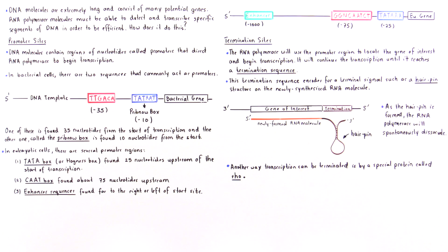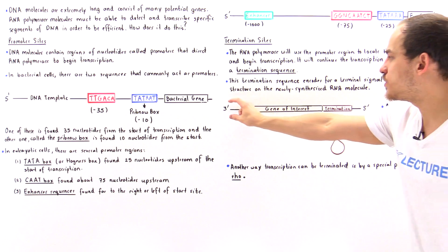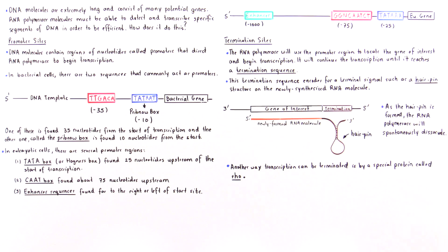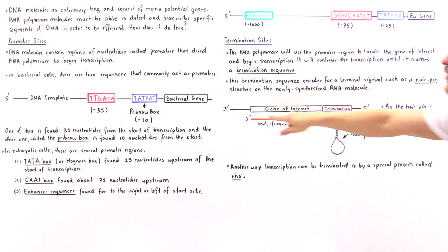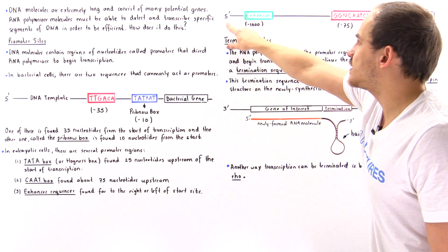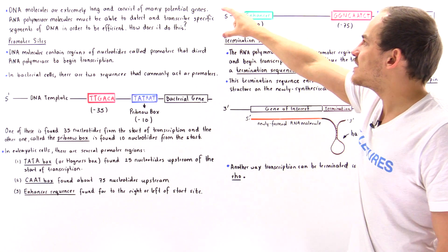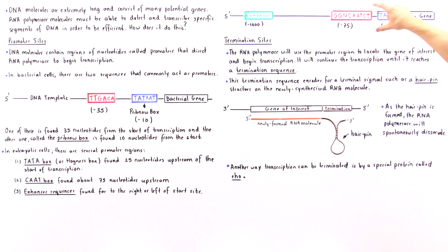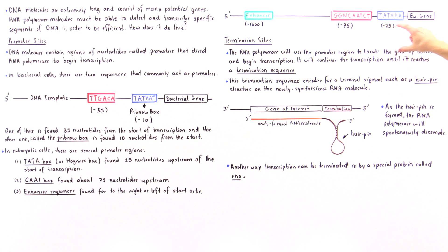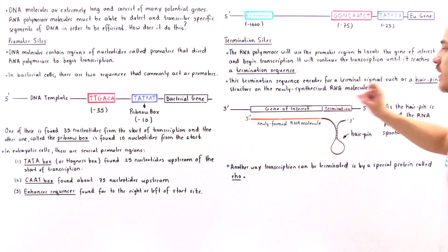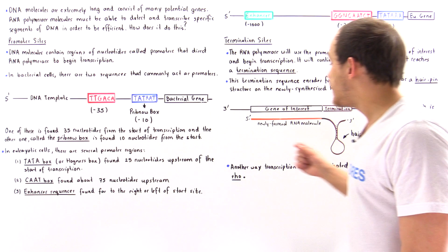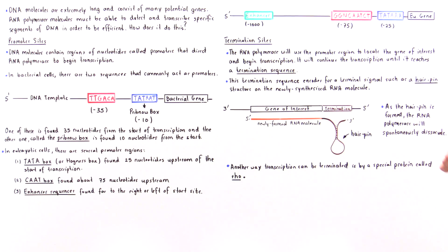To illustrate this, consider the complementary sequence to the gene: this is the 3' end and the other end is the 5' end. As the RNA polymerase moves along the DNA molecule, it begins transcribing the complementary template strand and continues forming the RNA molecule until it reaches the termination sequence.